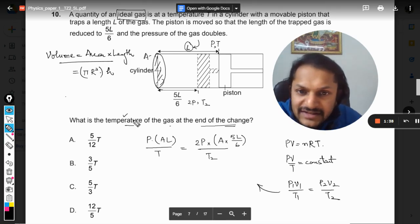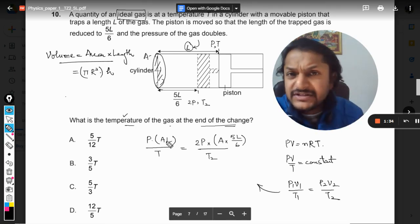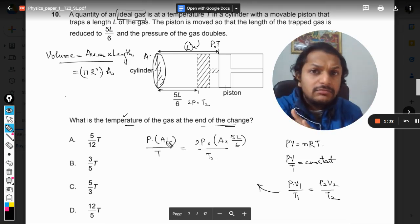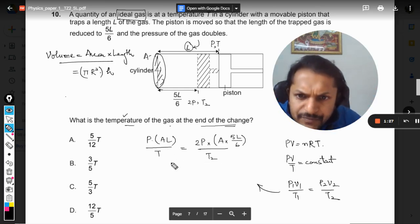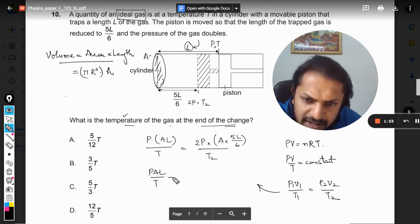So now we will cancel the things that we can, and this is just algebraic simplification. You can follow the things that you are comfortable with. So I'm just writing it as PAL divided by T, so I've taken this PA and L outside, so it is PAL times T2, and 2 into 5 by 6 is left here.